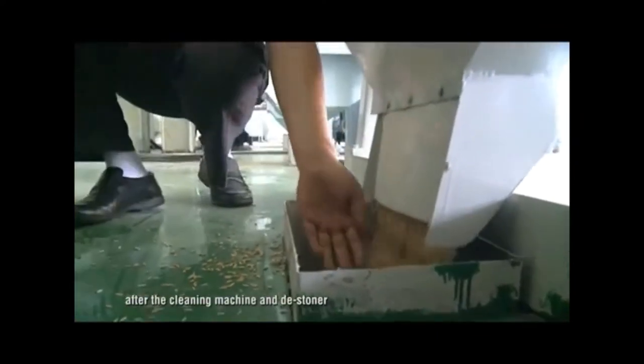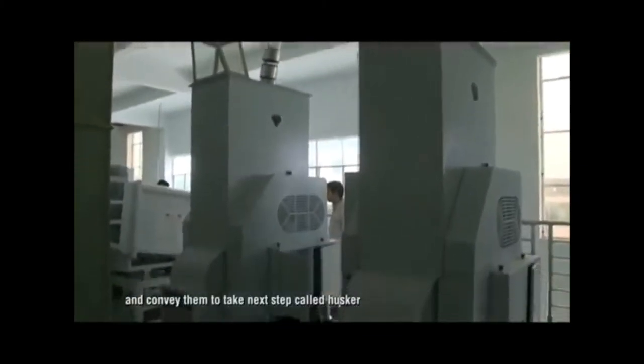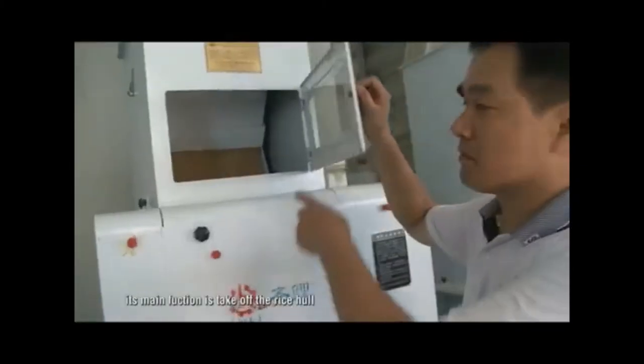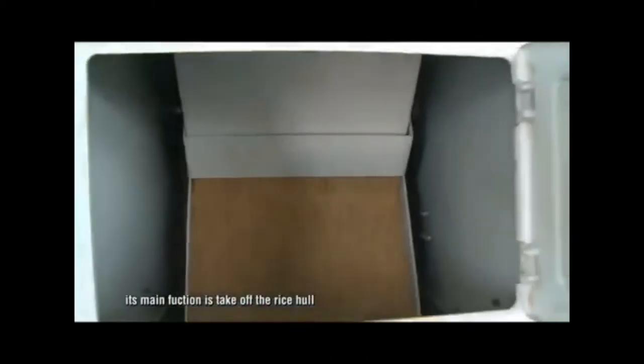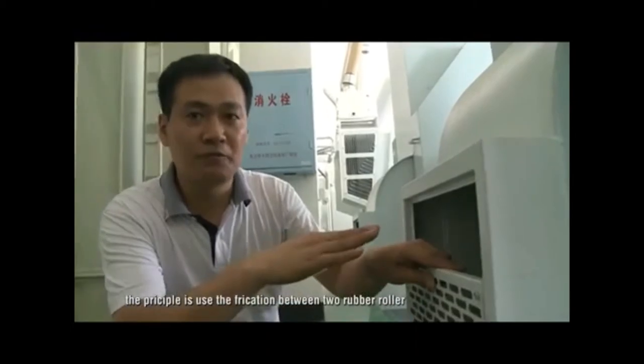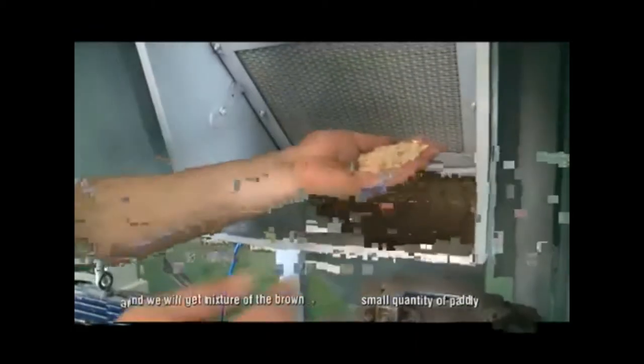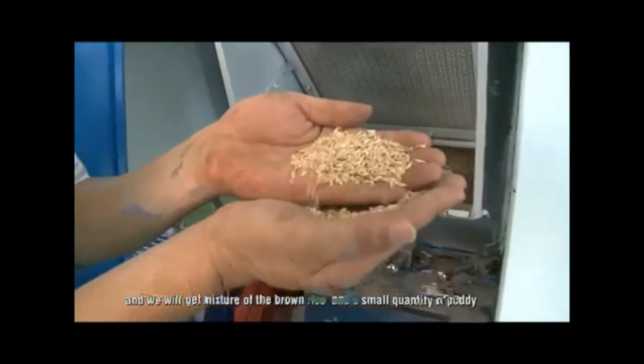After the cleaning machine and destoner, we get the complete clean paddy and convey them to take next step, called husker. Its main function is to take off the rice hull. The principle is to use the friction between two rubber rollers. The friction can take off the rice hull and we will get a mixture of brown rice and a small quantity of paddy.